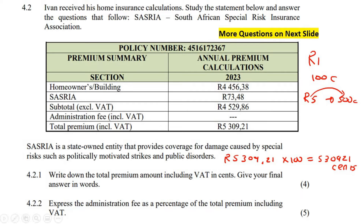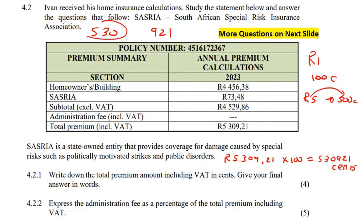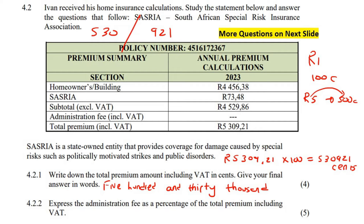Now it says write it in words. What I always tell learners to do is start at the back and break your number up into groups of three. So 530921 breaks into 530 and 921. You write out the first group: 530. Then you look at how many digits come after that — three digits means thousand. So you say 530 thousand, then write out 921. The final answer is five hundred and thirty thousand nine hundred and twenty-one cents.